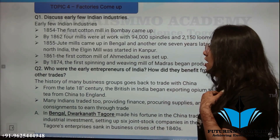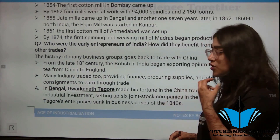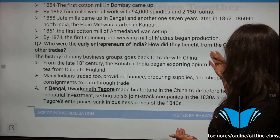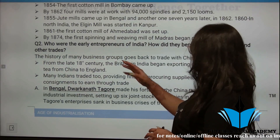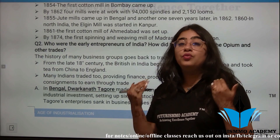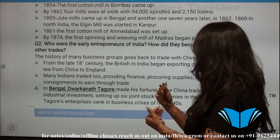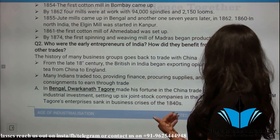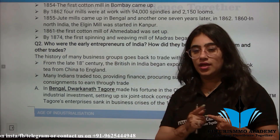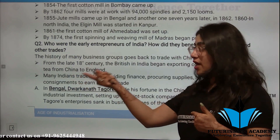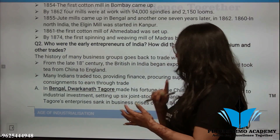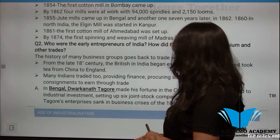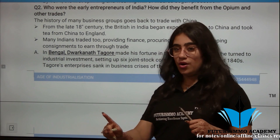Next question: Who were the early entrepreneurs of India? Indian businessmen who traded with China established themselves through that trade. From the late 18th century, the British in India began exporting opium to China and took tea from China to England. Opium went from India to China, and tea went from China to England. Indian traders also started trading, financing, procuring supplies, and sending consignments through ships.